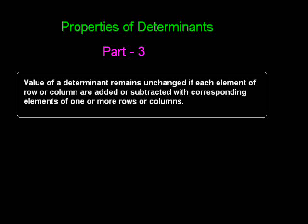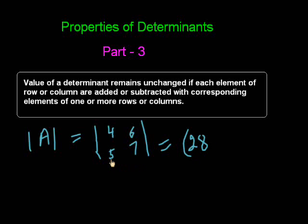It means there will not be any change in the value of the determinant if we add two rows or two columns. I am explaining it with a simple example. Suppose a determinant has elements 4, 6, 5, 7, and we calculate its value: 7 into 4 is 28, minus 5 into 6 is 30, and its value is minus 2.